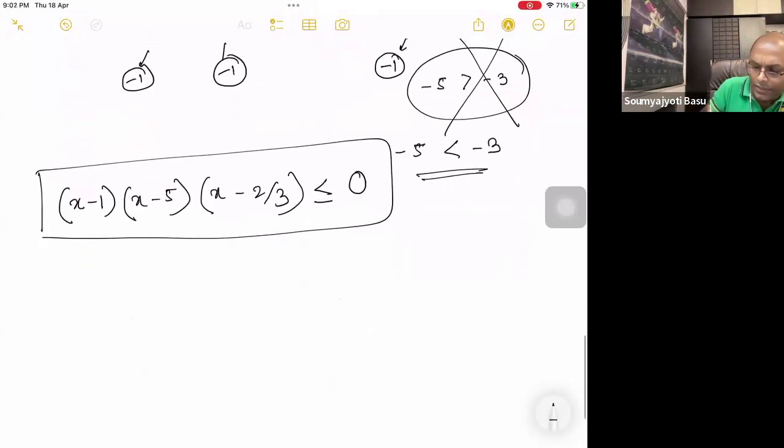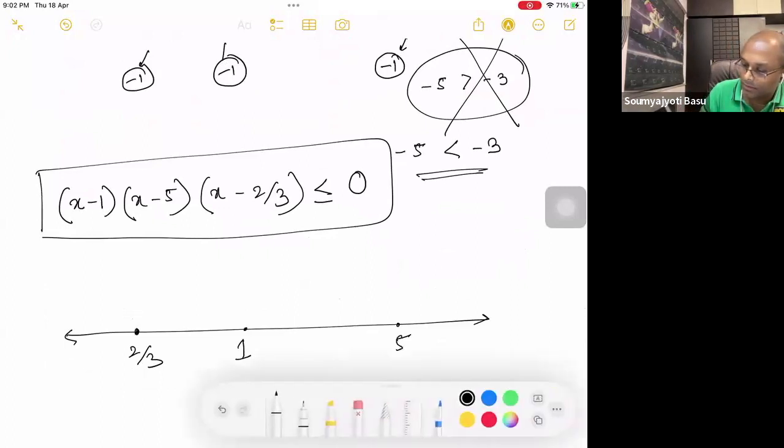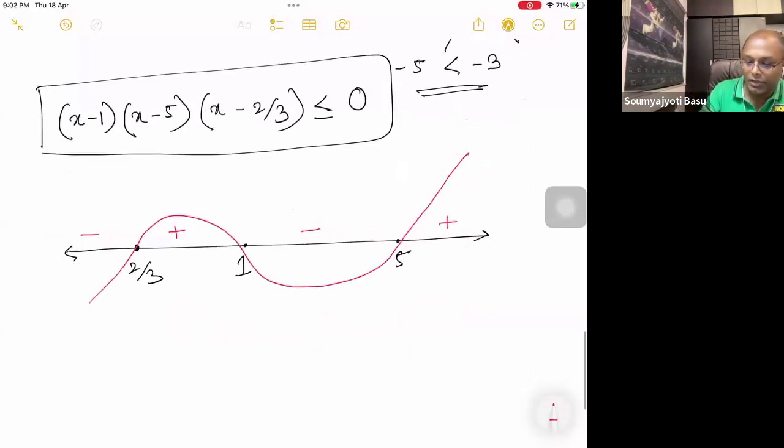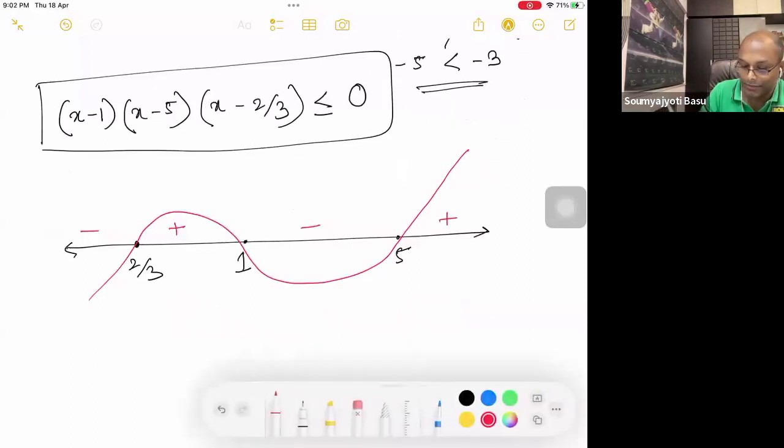Let's quickly solve this one. So, on the number line, you would be having dots, because it's less than or equal to. The roots are same. Right hand side, or the right most zone is positive, then negative, then positive, then negative. The curve becomes absolutely same, but the solution zones are different. You have to find out the negative zones. And of course, equal to the root.